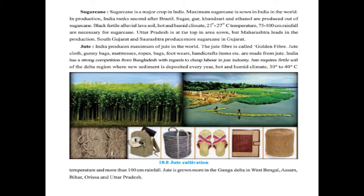The next is jute. India produces the maximum jute in the world. The jute fiber is also called golden fiber. Jute clothes, gunny bags, mattresses, ropes, bags, footwear, and handicraft items are made from jute. India faces strong competition from Bangladesh regarding cheap labour in the jute industry. Jute requires fertile soil of delta regions where new sediment is deposited every year, hot and humid climate, temperature of 30 to 40 degree Celsius, and more than 100 cm of rainfall. Jute is grown more in the Ganga Delta in West Bengal, Assam, Bihar, Orissa, and Uttar Pradesh.